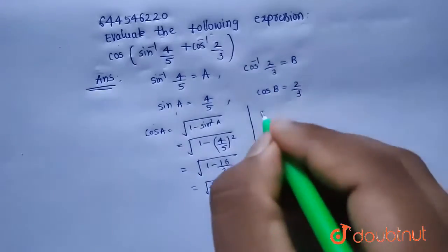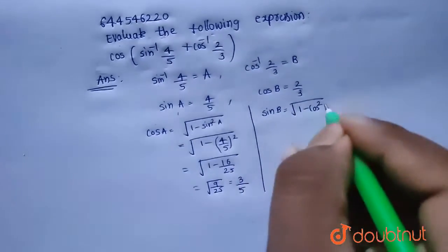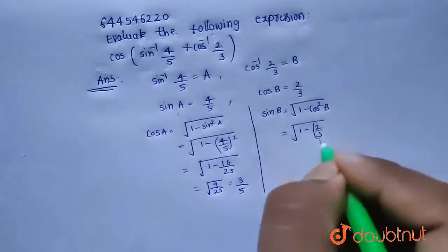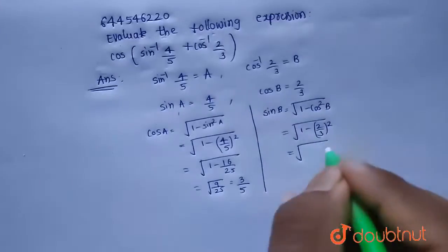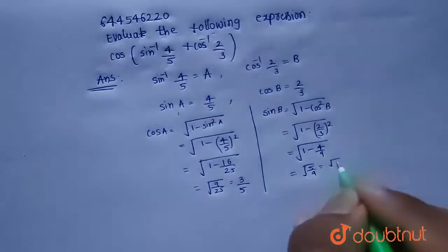And similarly, sin b is equals to root over 1 minus cos square b. So root over 1 minus 2 by 3 whole square. That will be equals to root over 1 minus 4 by 9, which is equals to root over 5 by 9. So this is root 5 by 3.